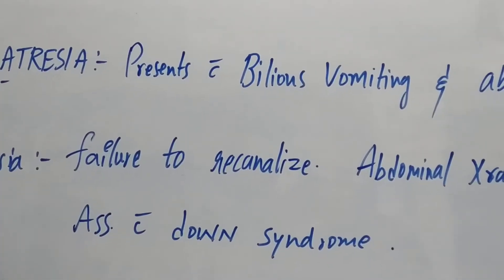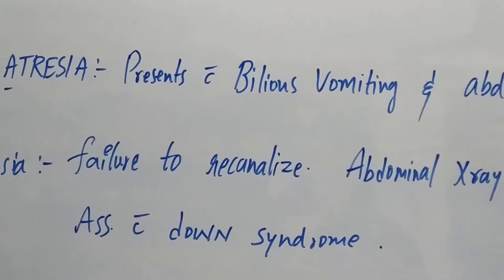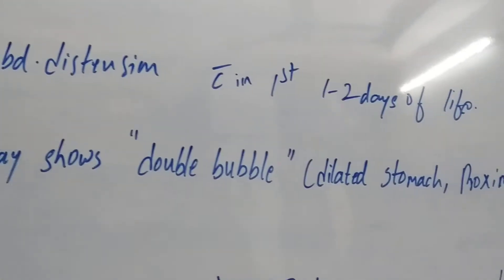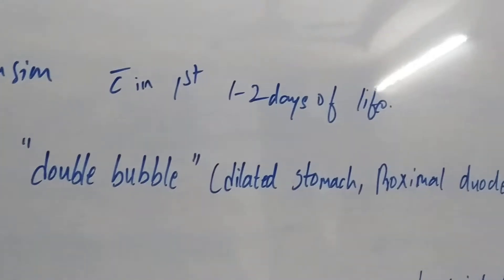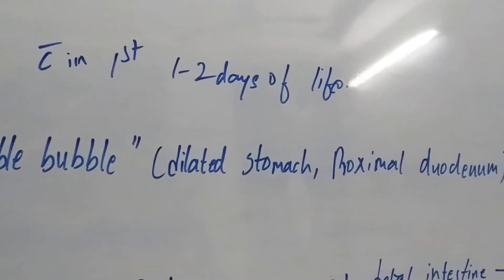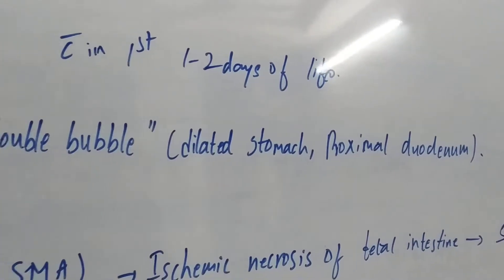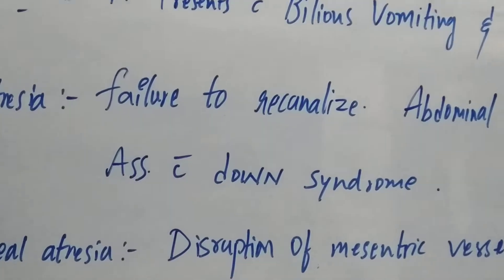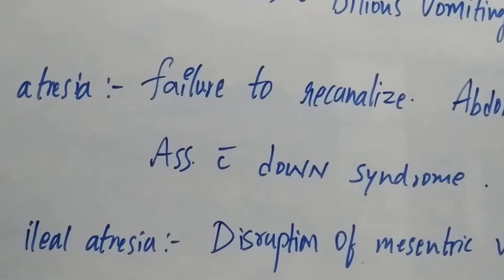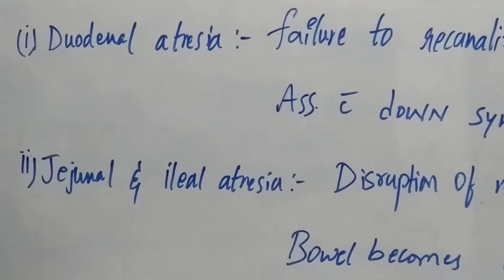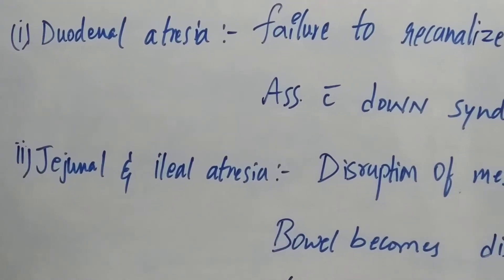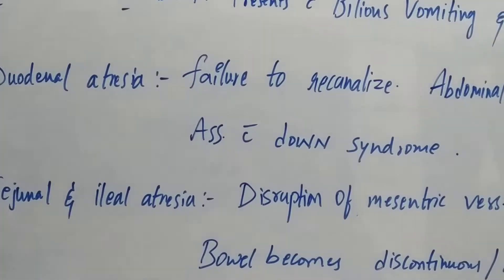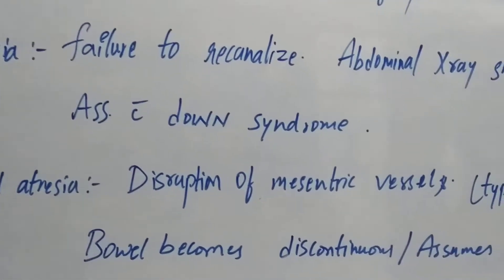Duodenal atresia is the failure to recanalize the duodenum. Abdominal X-ray shows the double bubble appearance, meaning dilated stomach and proximal duodenum. It is associated with Down syndrome.